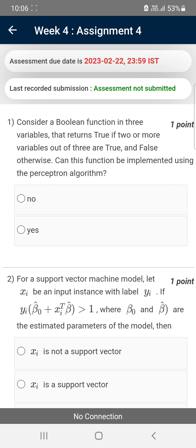For the first question: Consider a Boolean function in three variables that returns true if two or more variables out of three are true and false otherwise. Can this function be implemented using the perceptron algorithm? The probable solution is yes, so mark the second option.